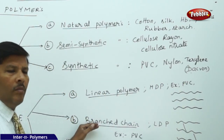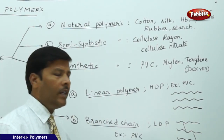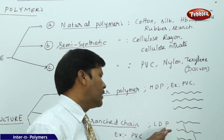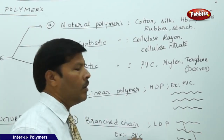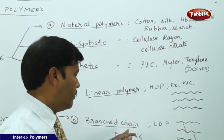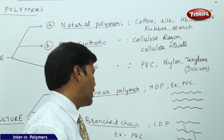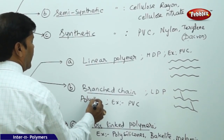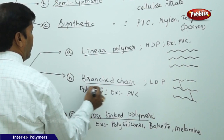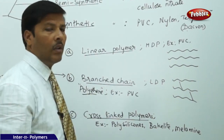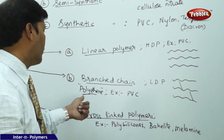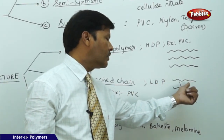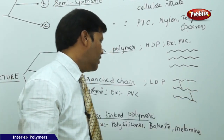For branched chain polymers, we take the same polyvinyl chloride. This gives a low density polymer (LDP). Polythene is one of the best examples of a low density polymer — plastic carry bags are made of polythene. In branched chain polymers, the polymeric chains are not only in a straight chain but also in branched form.